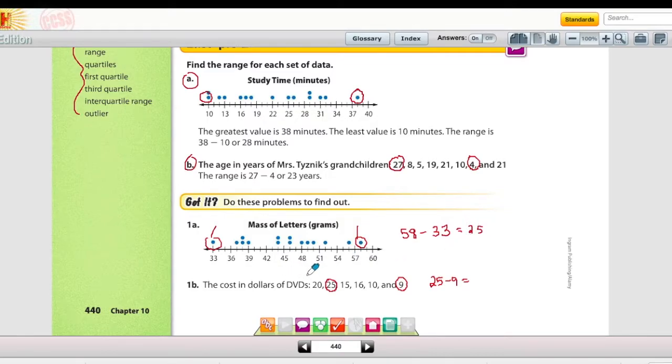In 1b, we have some numbers there. The largest is 25, and the smallest is 9. 25 minus 9 is 16. That's pretty easy to find the range.